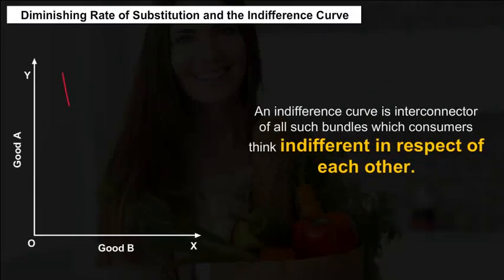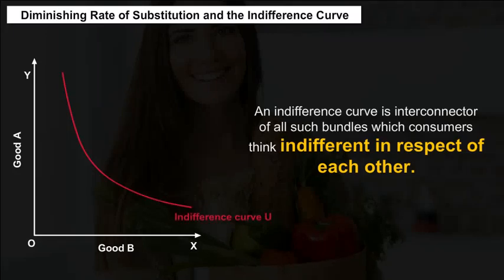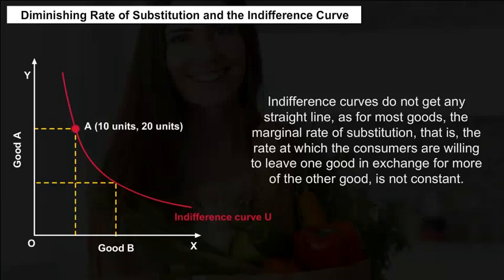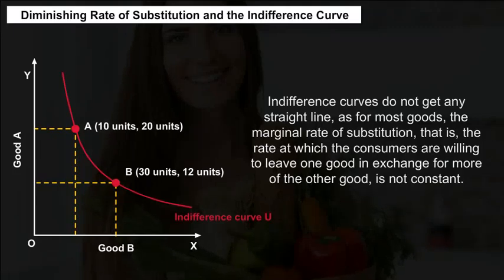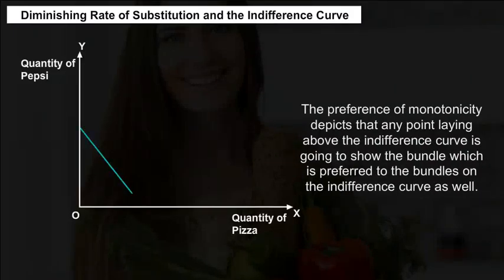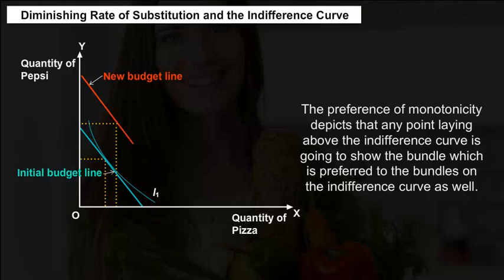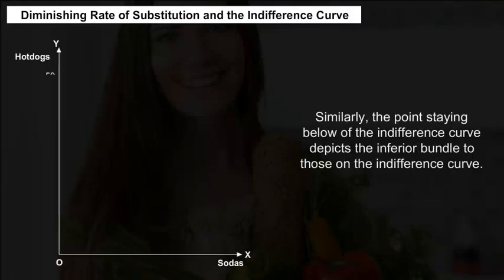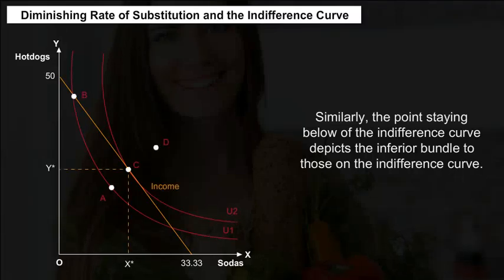An indifference curve is a locus of all bundles which the consumer considers indifferent to each other. Indifference curves are not straight lines for most goods, because the marginal rate of substitution — the rate at which the consumer is willing to leave one good in exchange for more of the other — is not constant. Monotonicity of preferences implies that any point lying above the indifference curve shows a preferred bundle, while a point lying below depicts an inferior bundle.